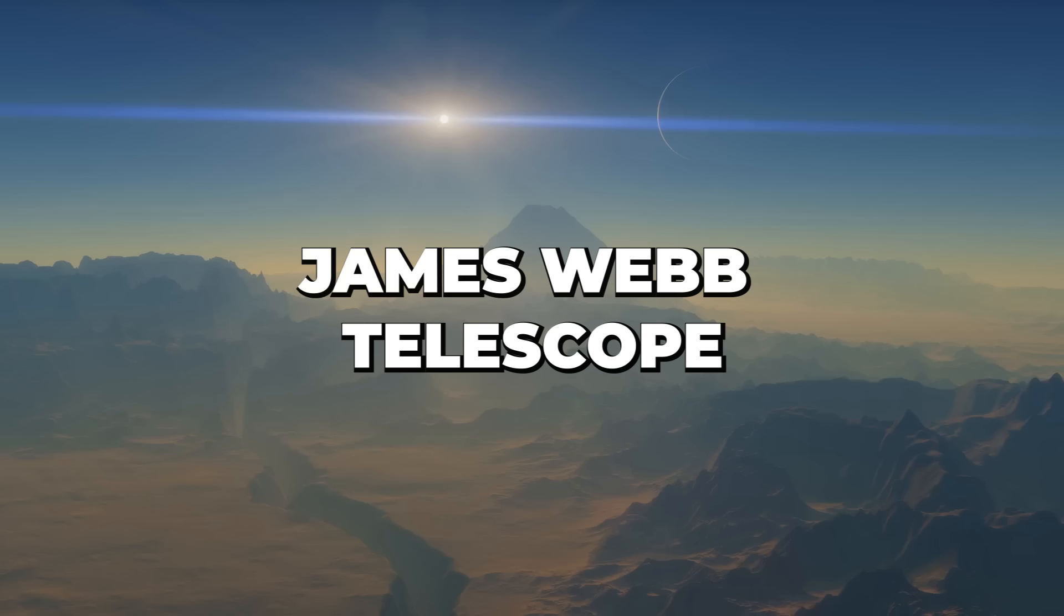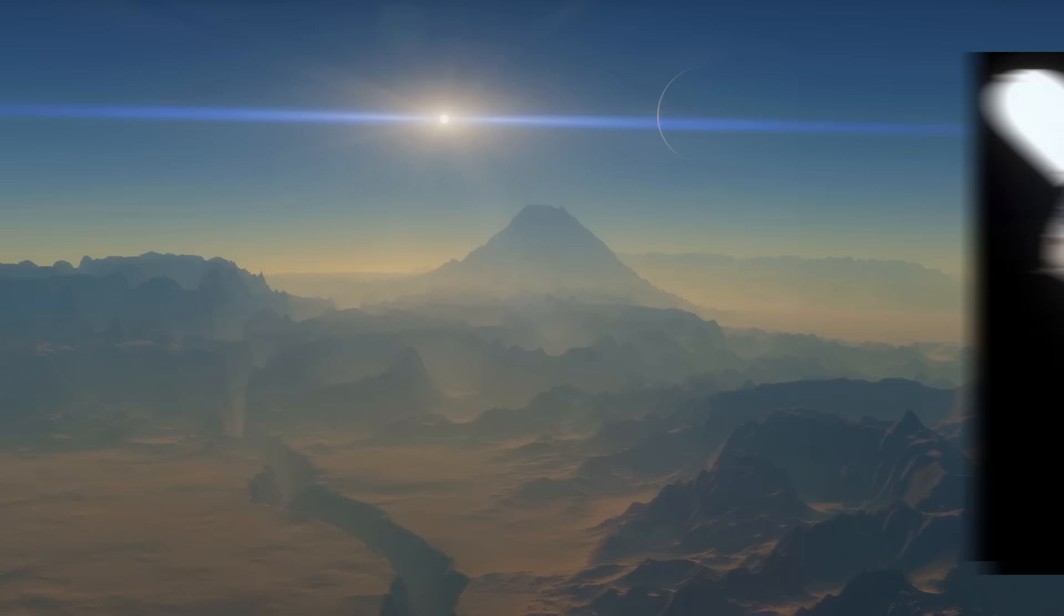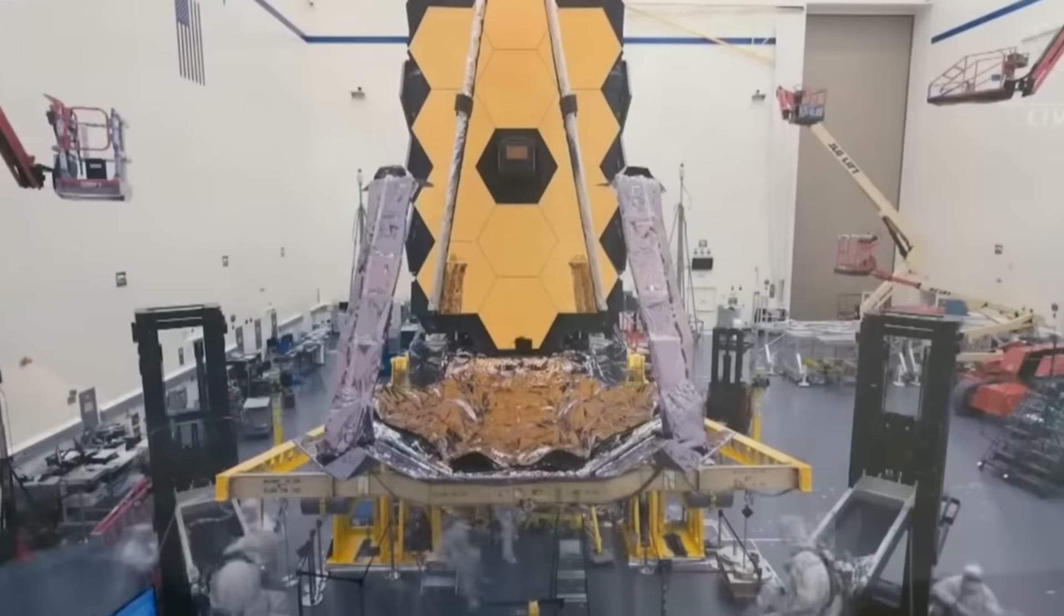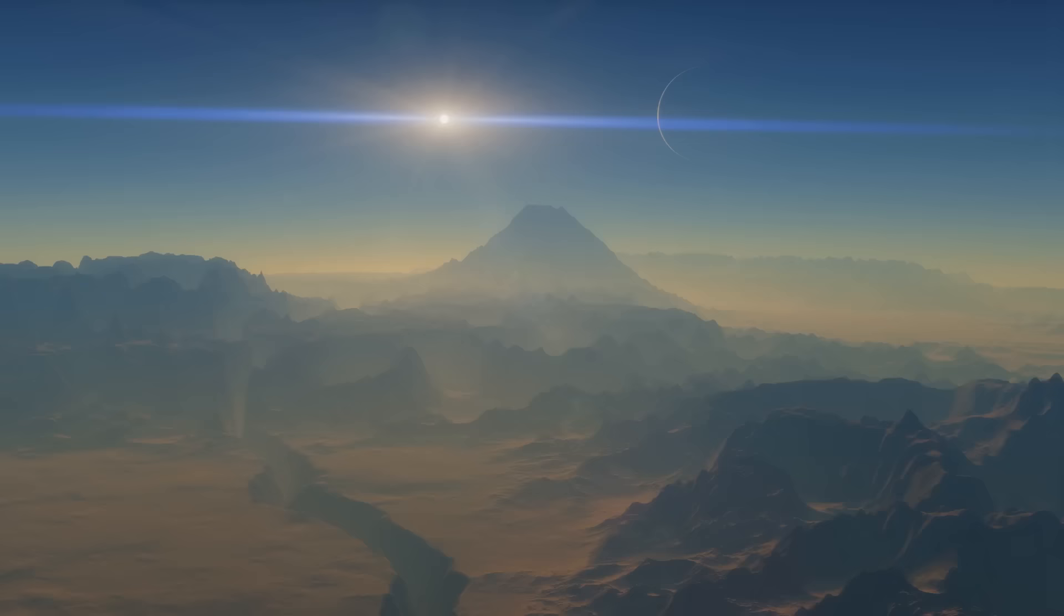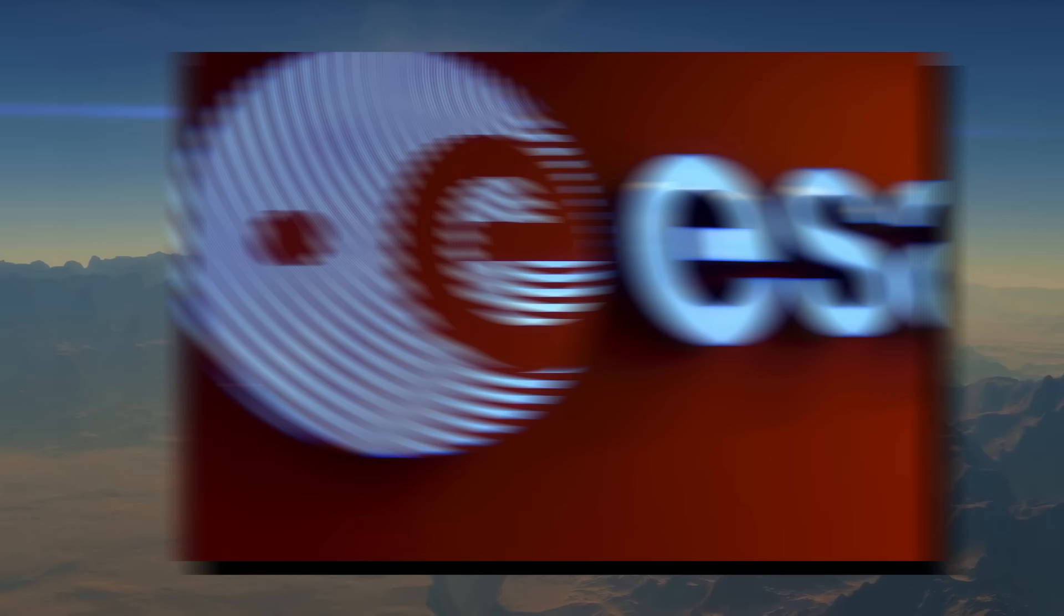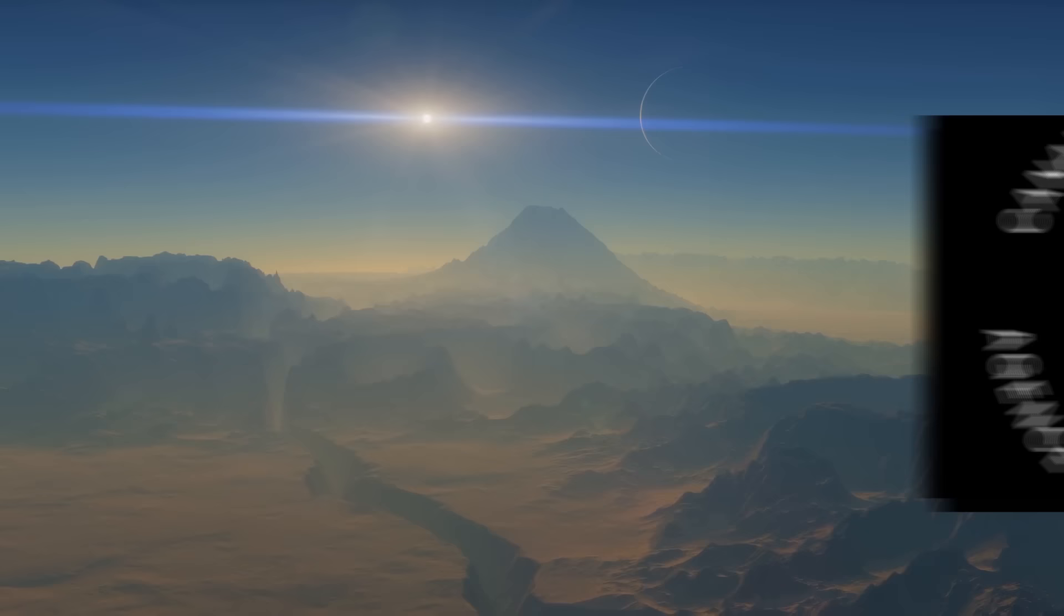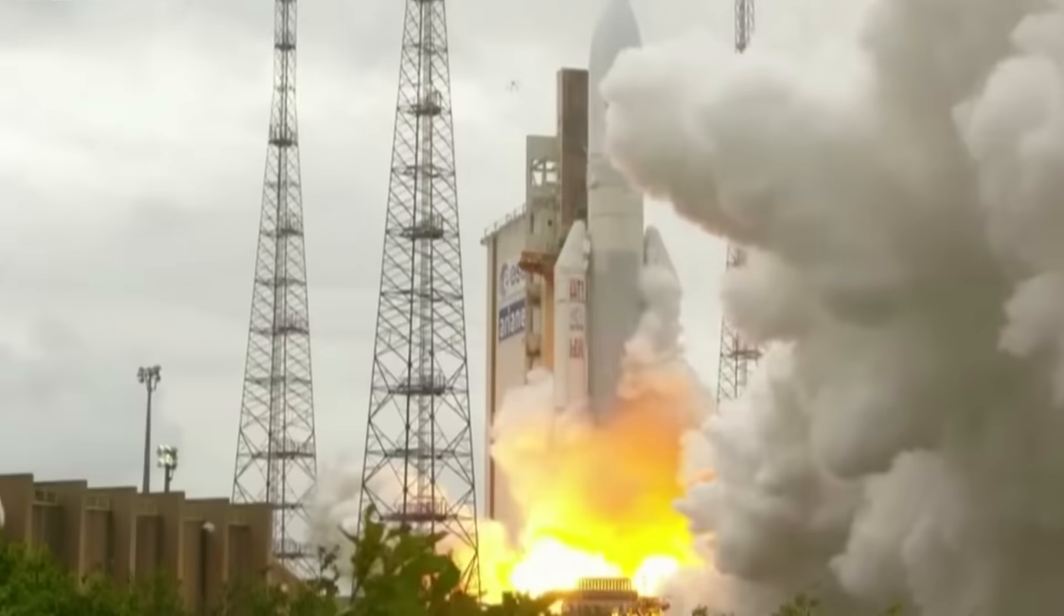James Webb Telescope. The James Webb Space Telescope, or Webb, is a new and better version of the Hubble Telescope. It's meant to find answers about the universe and make important discoveries in astronomy. Webb can look far back in time, from when stars and planets formed to the beginning of the first galaxies. It's a team effort with NASA, European Space Agency, and Canadian Space Agency, and it was launched into space using an Ariane 5 rocket from French Guiana.